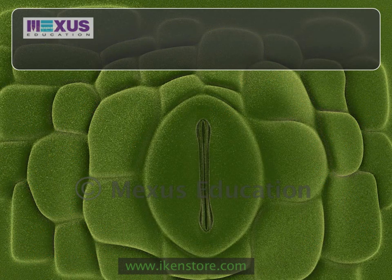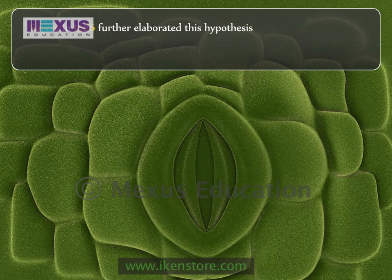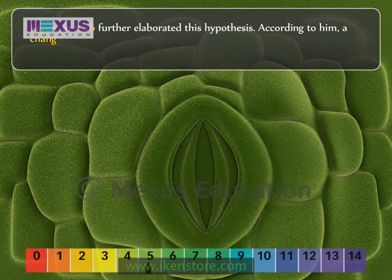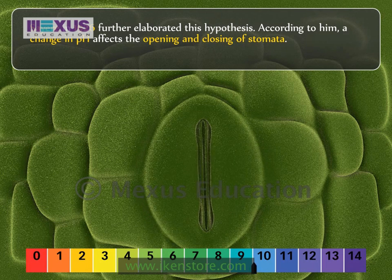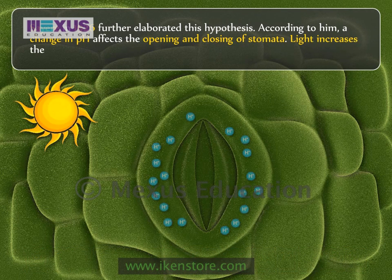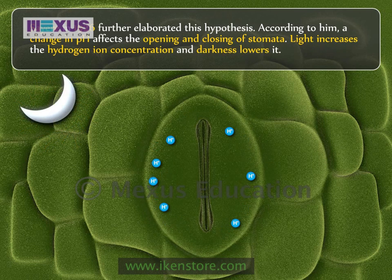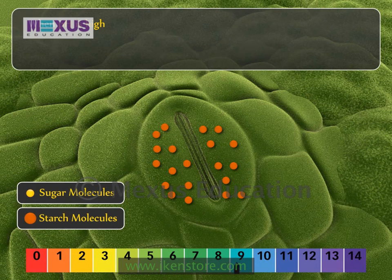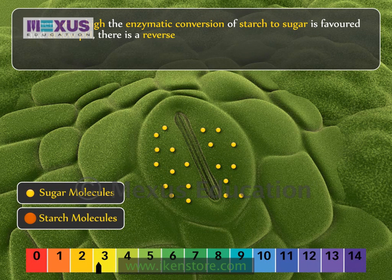Sayeri, in 1926, further elaborated this hypothesis. According to him, a change in pH affects the opening and closing of the stomata. Light increases the hydrogen ion concentration and darkness lowers it. When pH is high, the enzymatic conversion of starch to sugar is favoured, and at a low pH there is a reverse process and starch synthesis takes place.